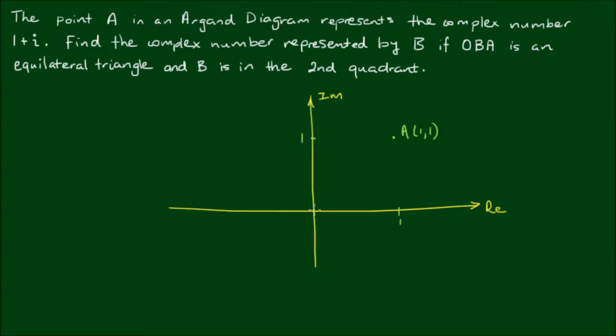The point O is the origin. And the point B, we are told, lies in the second quadrant. So we need to find the coordinates of point B. We are told that O, B and A form an equilateral triangle.